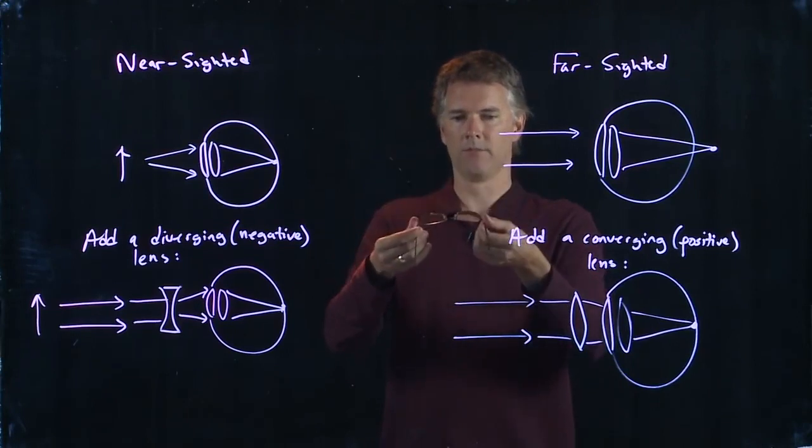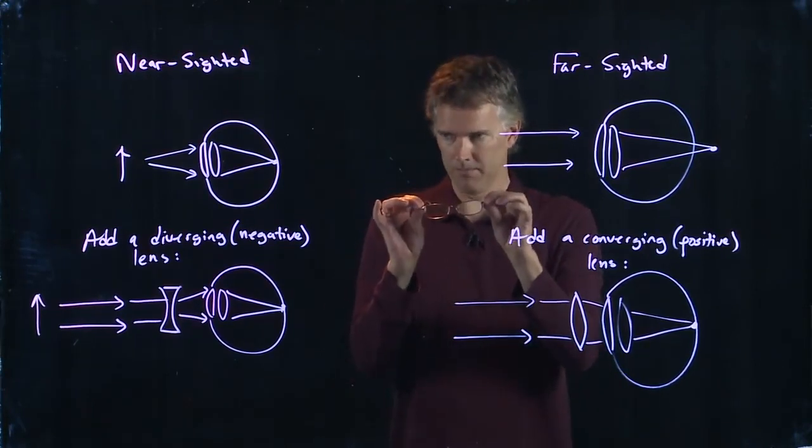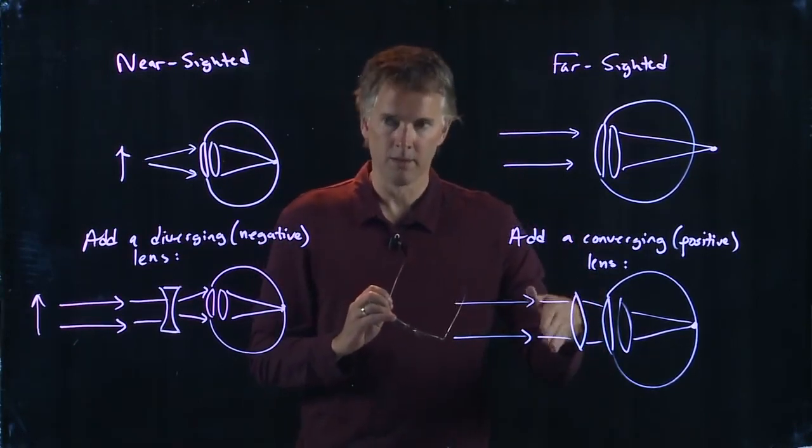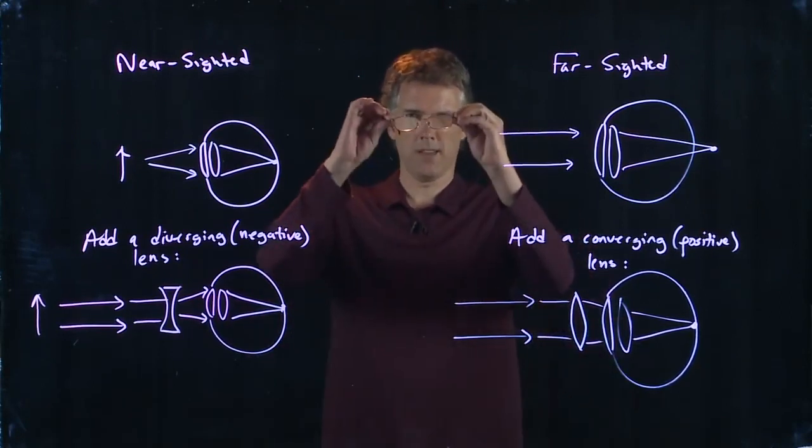Now there's other things that you can figure out here. One is there is a little bit of astigmatism, which means it's not a spherical lens. There's actually a little bit of cylindrical shape to it. And the way you can tell that with somebody's glasses is if you look through it and you rotate